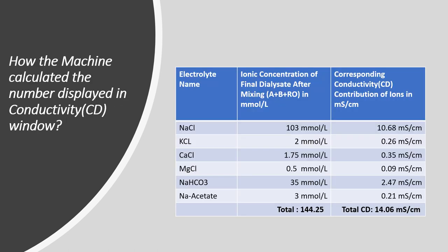Now let's answer how the machine calculates the value displayed in the conductivity window. Dialysate contains certain electrolytes in near-physiological concentrations, and each electrolyte has its own contribution to total conductivity. The total conductivity displayed is the sum of all individual electrolyte conductivity values.